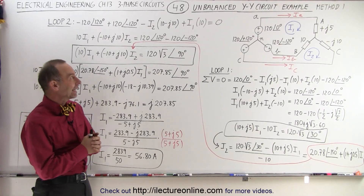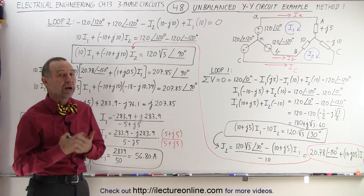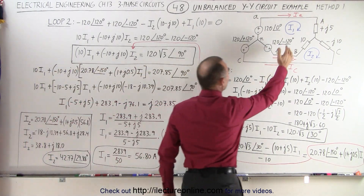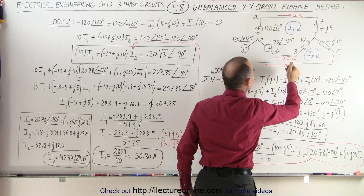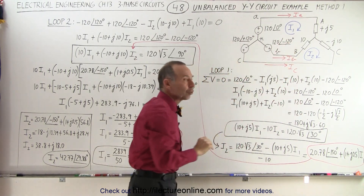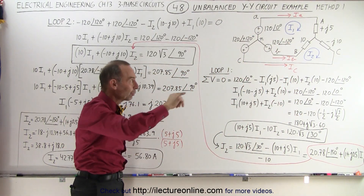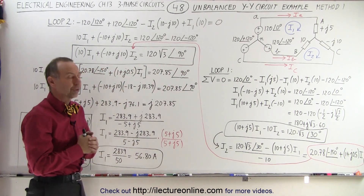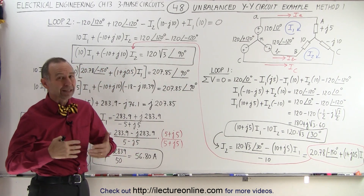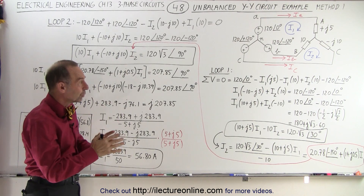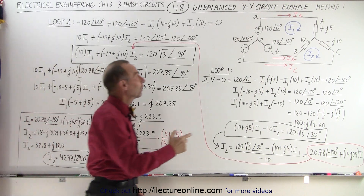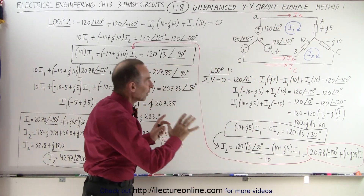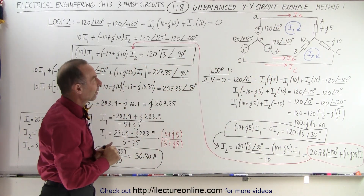Welcome to our lecture online. Here we have an unbalanced YY circuit, and in order to calculate the currents IA, IB, and IC, we're going to have to use Kirchhoff's rules. In other words, we're going to sum up the voltages around the loops to solve for the currents. Since this is a very involved problem, we're only going to show how to get the one current IA, and in order to do that, we're going to follow the following process.